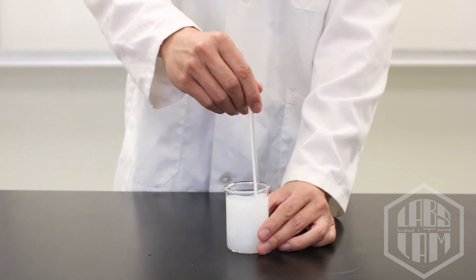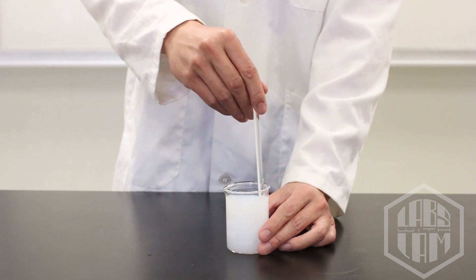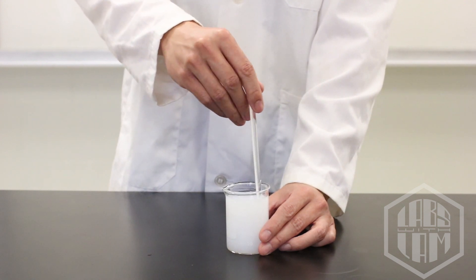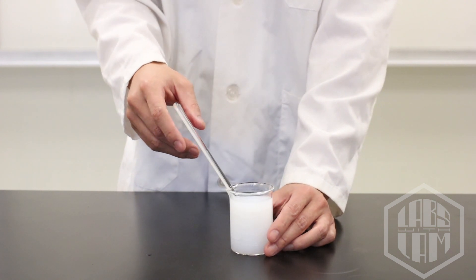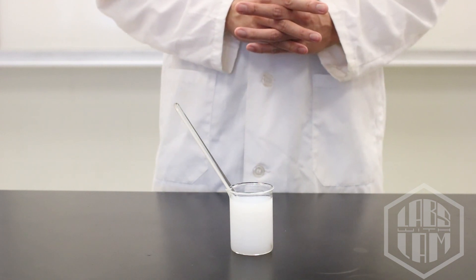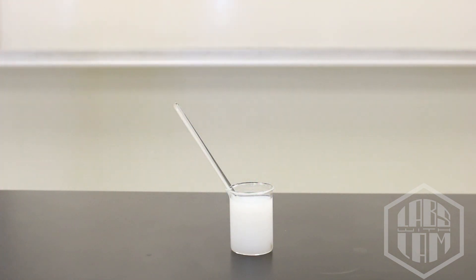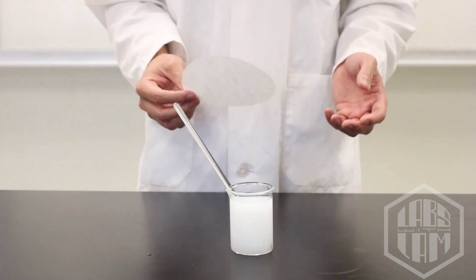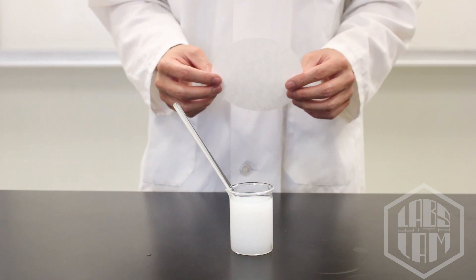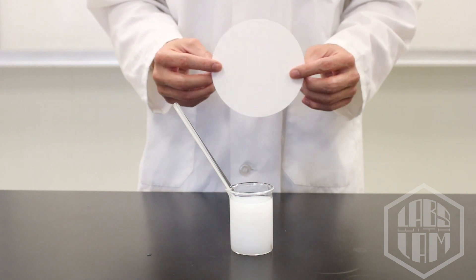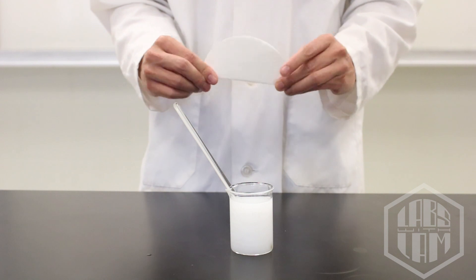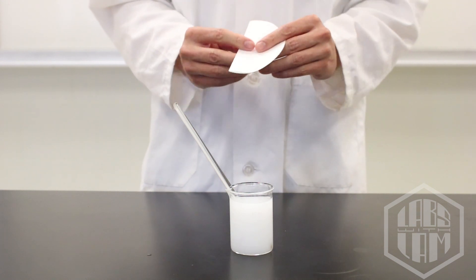I'll give this a quick stir, and while we wait for the reaction to complete, let me go grab some filter paper and I'm going to show you what we're going to do with it. Alright, this is pretty simple. We're just going to fold it in half and then fold it in half again. So quarters.